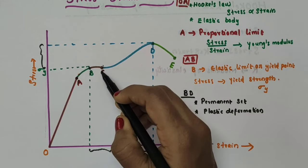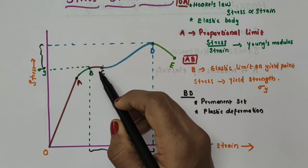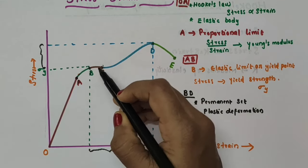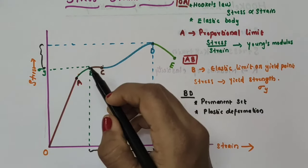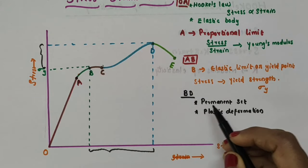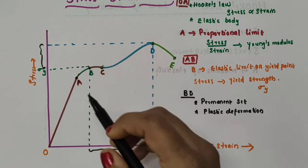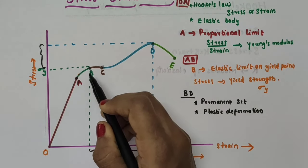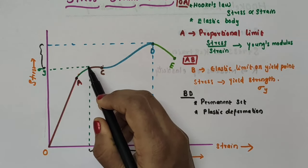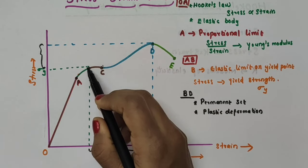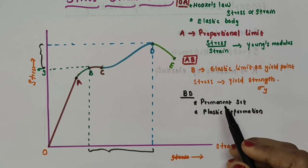Consider a point C between B and D. At this point C, when the load or applied force is removed, the body does not regain its original dimension — the material is said to have a permanent set, and the deformation is said to be plastic deformation. The yield point is the point at which the material starts to deform plastically. When this yield point is crossed, permanent deformation of the material occurs.